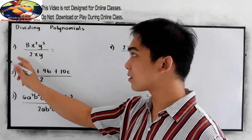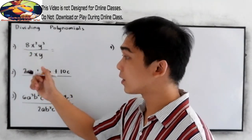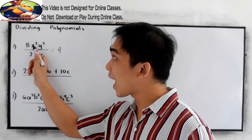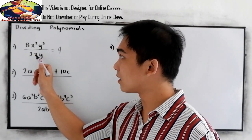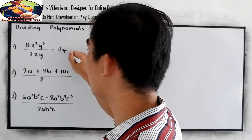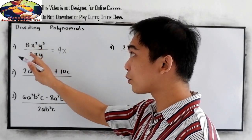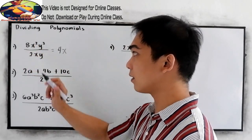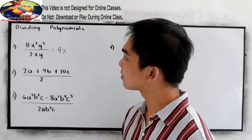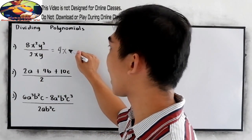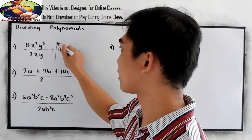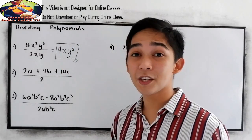For our coefficients, 8 divided by 2, that is 4. And for the variable, if we have the same base in dividing, we just need to subtract the exponent. So copy the variable x, and subtract 2 minus 1, that is 1, or simply x. Next, we have a base of y, so copy y, 3 minus 1, we have 2 as our exponent. So that will be our final answer.